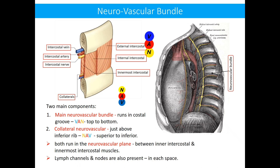In addition to the neurovascular bundle, lymph channels and lymph nodes are also present in each intercostal space. This topic will be continued in part two.